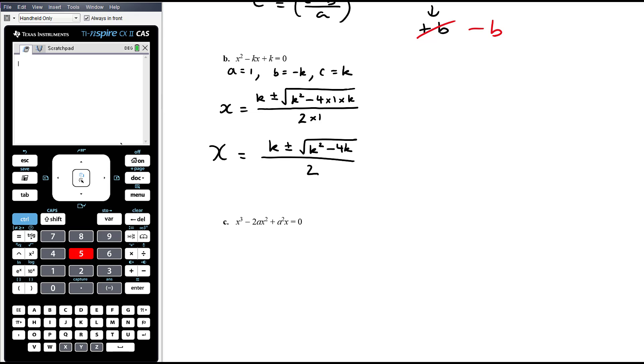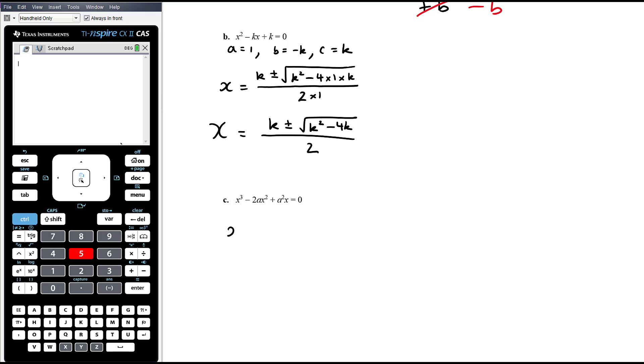Okay, part c, focusing on the x's, which is what we're trying to solve for, we have a cubic equation in x, but we have a common factor of x. So always, first step of trying to factorise, look for common factors, take them out if you can.